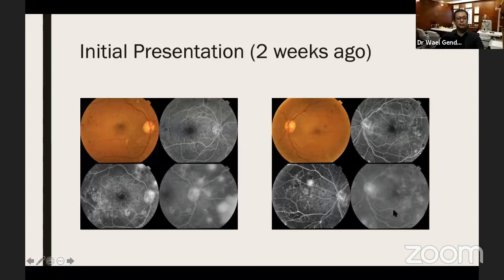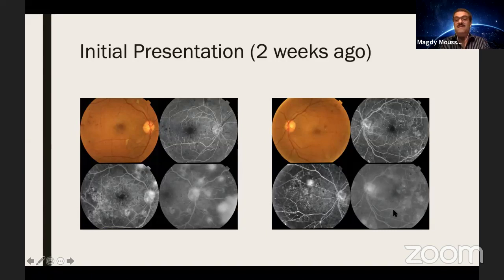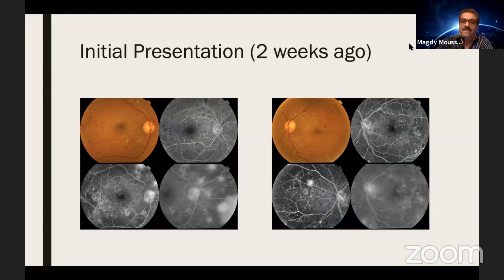This is the left eye. You can see he also has proliferative diabetic retinopathy and NVD and NVE on the nasal side. This was the initial presentation.